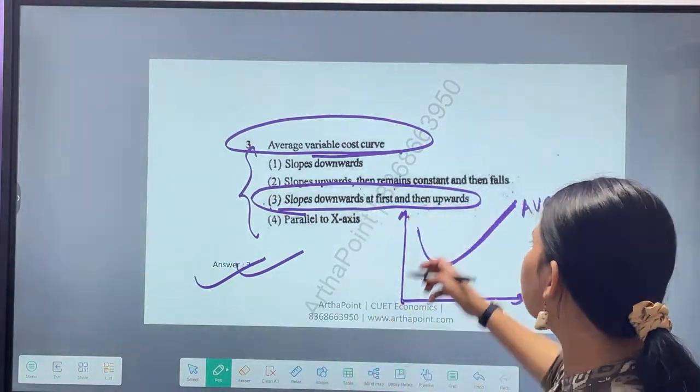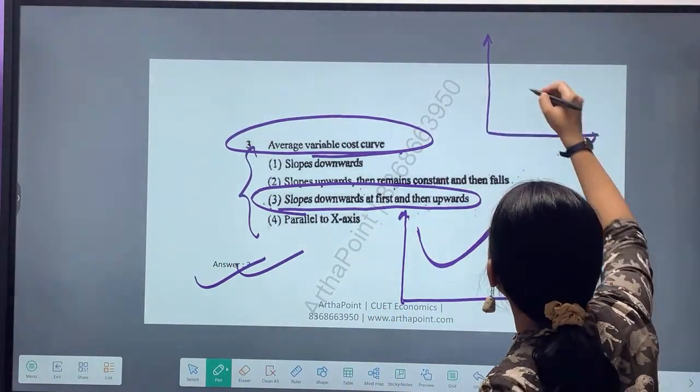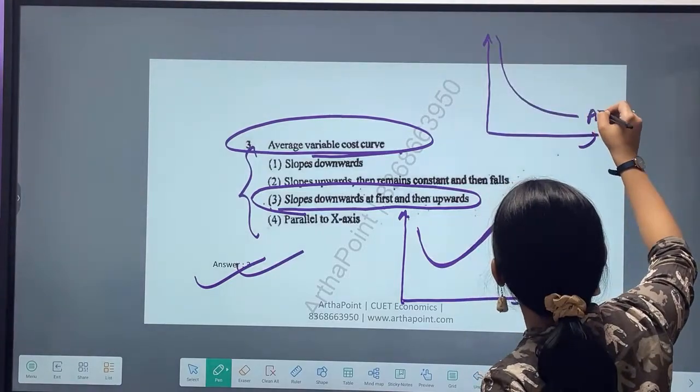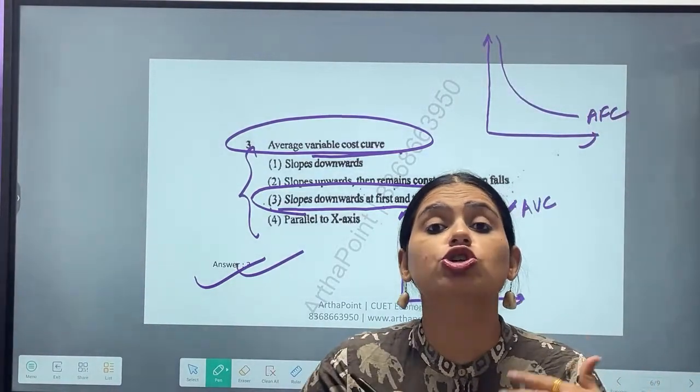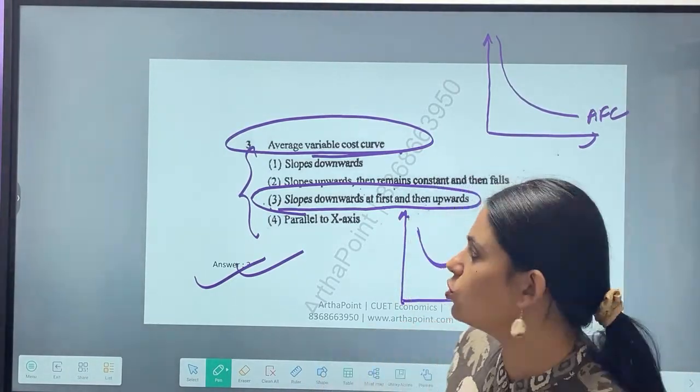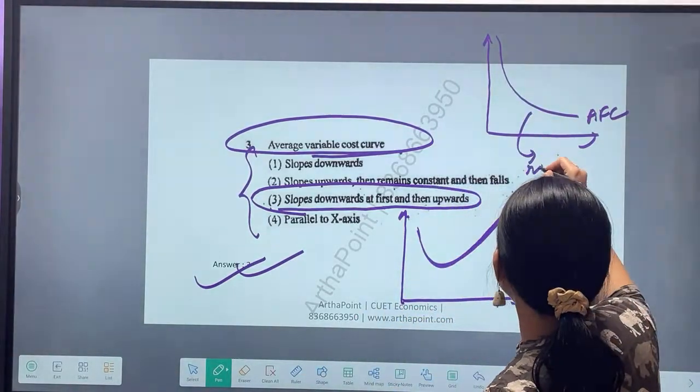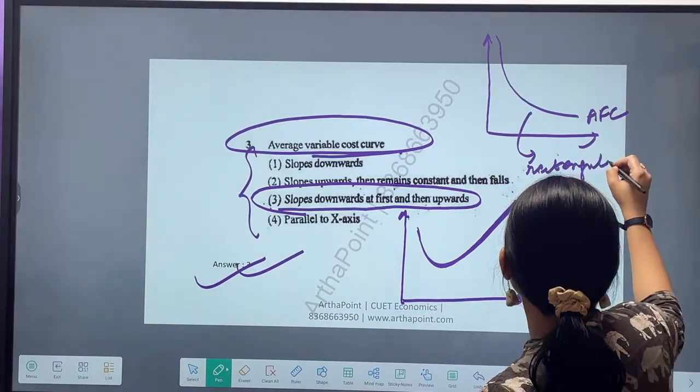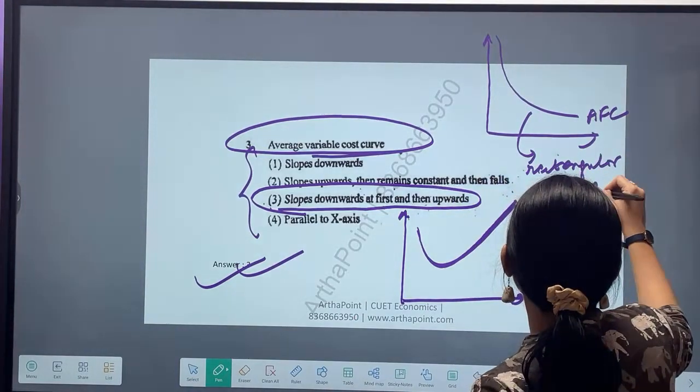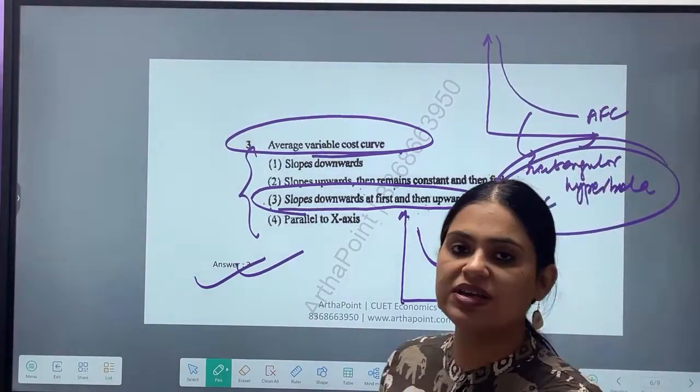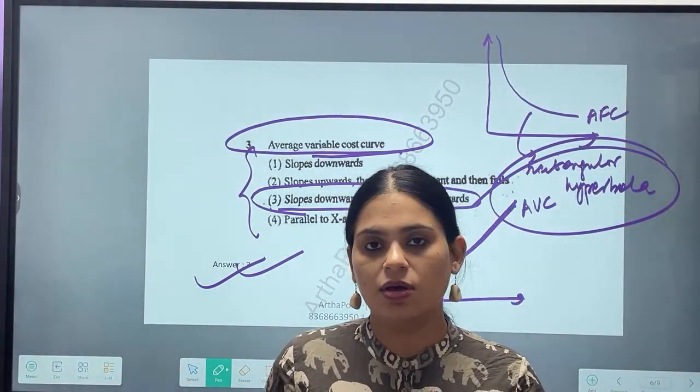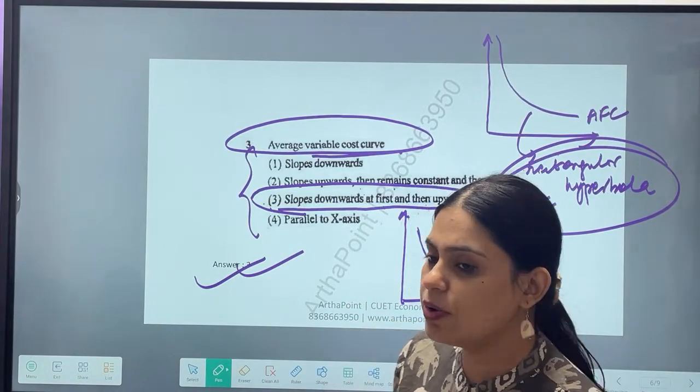By the way, what about ALC? ALC looks like this. Sometimes they ask you what is the shape of ALC. This is rectangular hyperbola. So the shape of ALC is rectangular hyperbola. Is that clear to everyone?